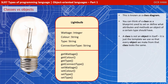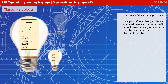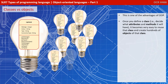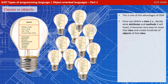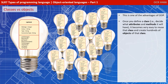What we're showing you here is what is known as a class diagram. You can think of a class as a blueprint used to set out or define what the attributes and methods an object of a certain type should have. Now be careful — a class is not actually an object itself. It is just a template we use so that every object we make from that class looks the same. Once you define a class, i.e. decide what attributes and methods it will have, it becomes very easy to reuse that class and create hundreds of objects of that class.